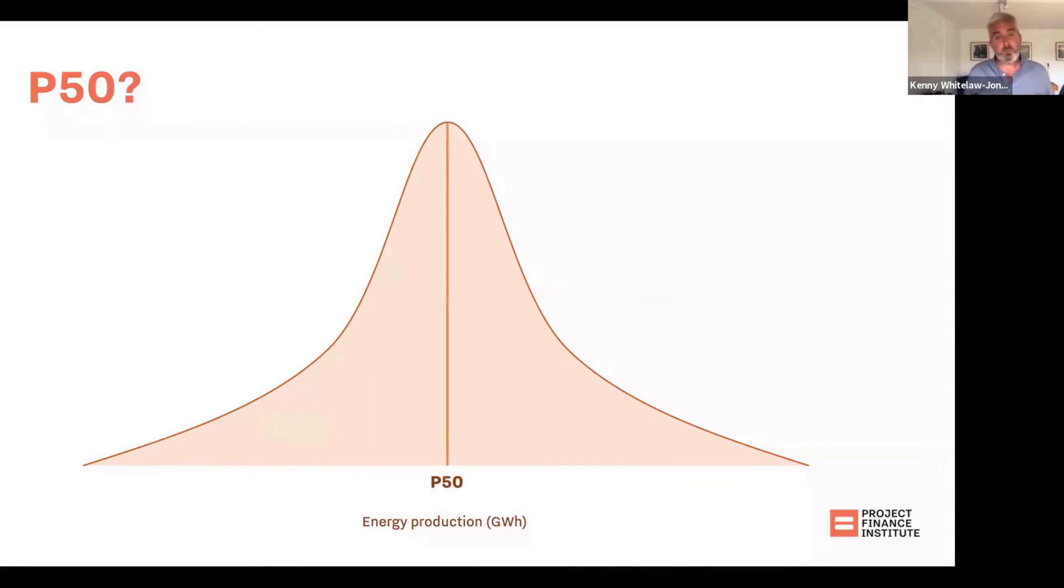When we talk about P50, what we're talking about is that level of energy production that has a 50% chance of being exceeded. So that's going to be bang in the middle of a normal distribution, 50% chance it could be exceeded, and of course a 50% chance that it could be less.